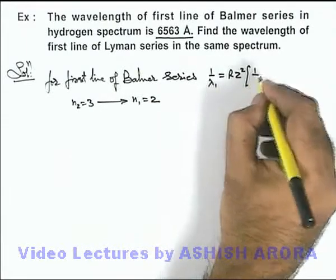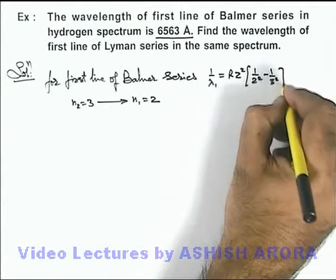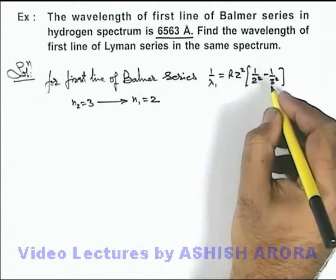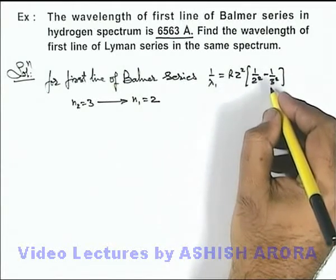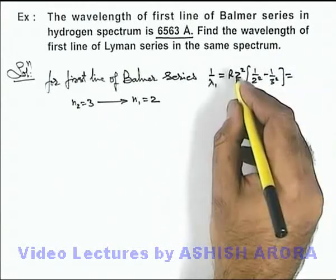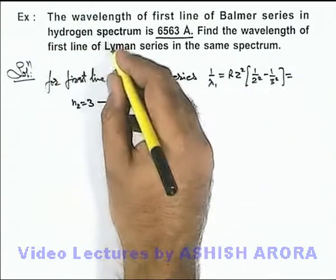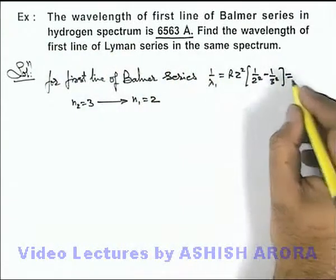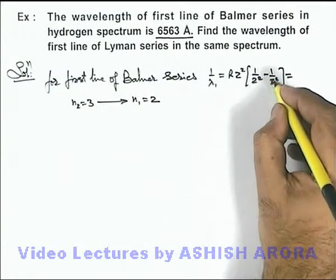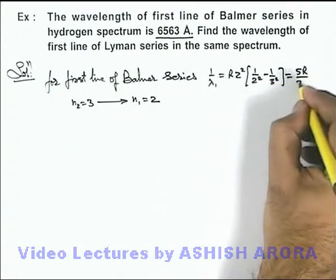Substituting, we get 1/2² − 1/3², which is 1/4 − 1/9. We substitute Z as 1 for the hydrogen spectrum. On simplifying, we get 5R/36.